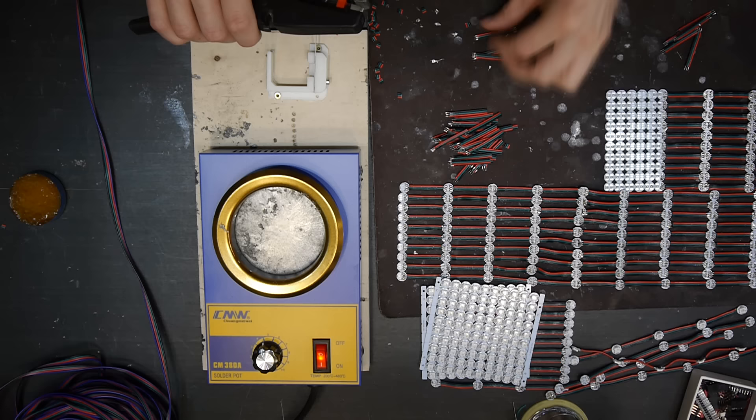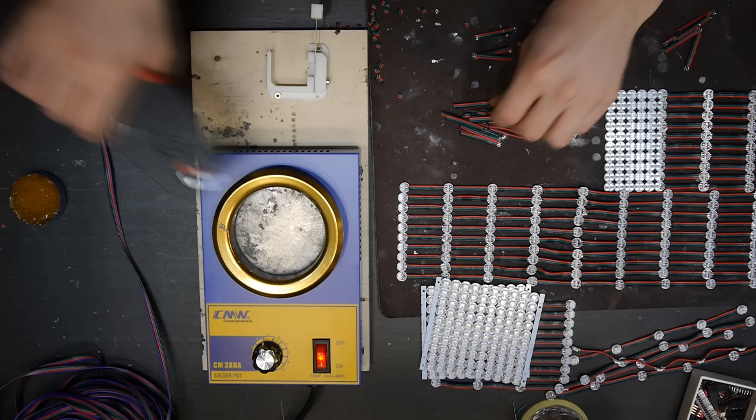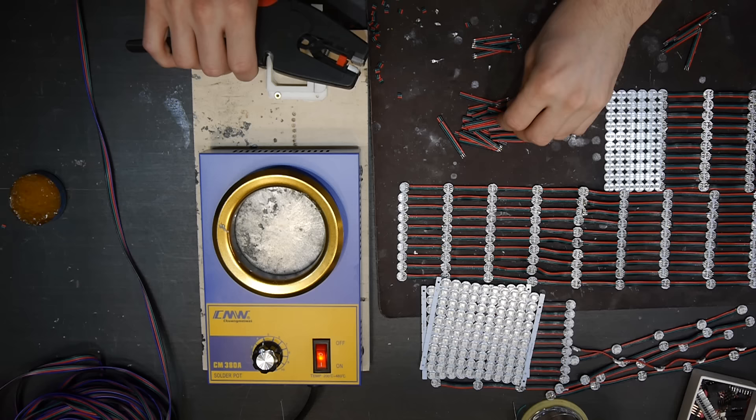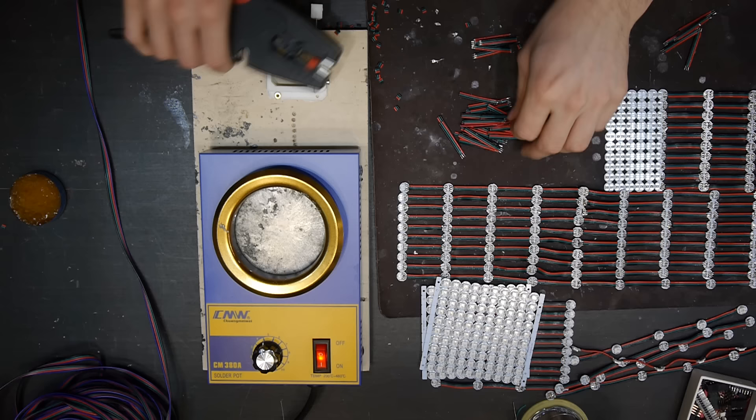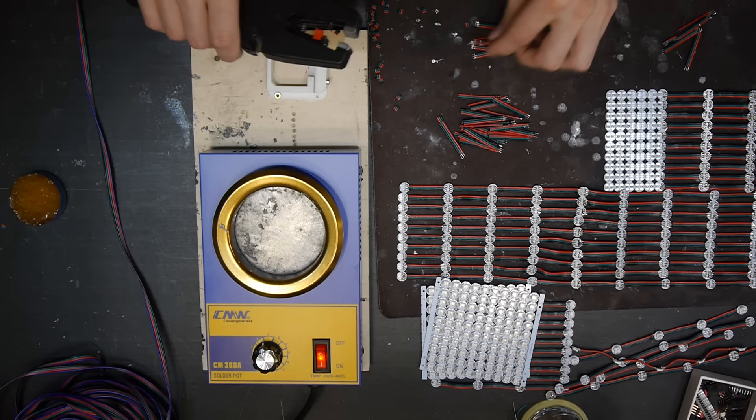The solder pot I use is 80 millimeter in diameter. It's a little bit big. If I would buy it again, I would buy the 50 millimeter. In fact, they are quite cheap, about 20 bucks. The solder itself is in fact more expensive than the pot.